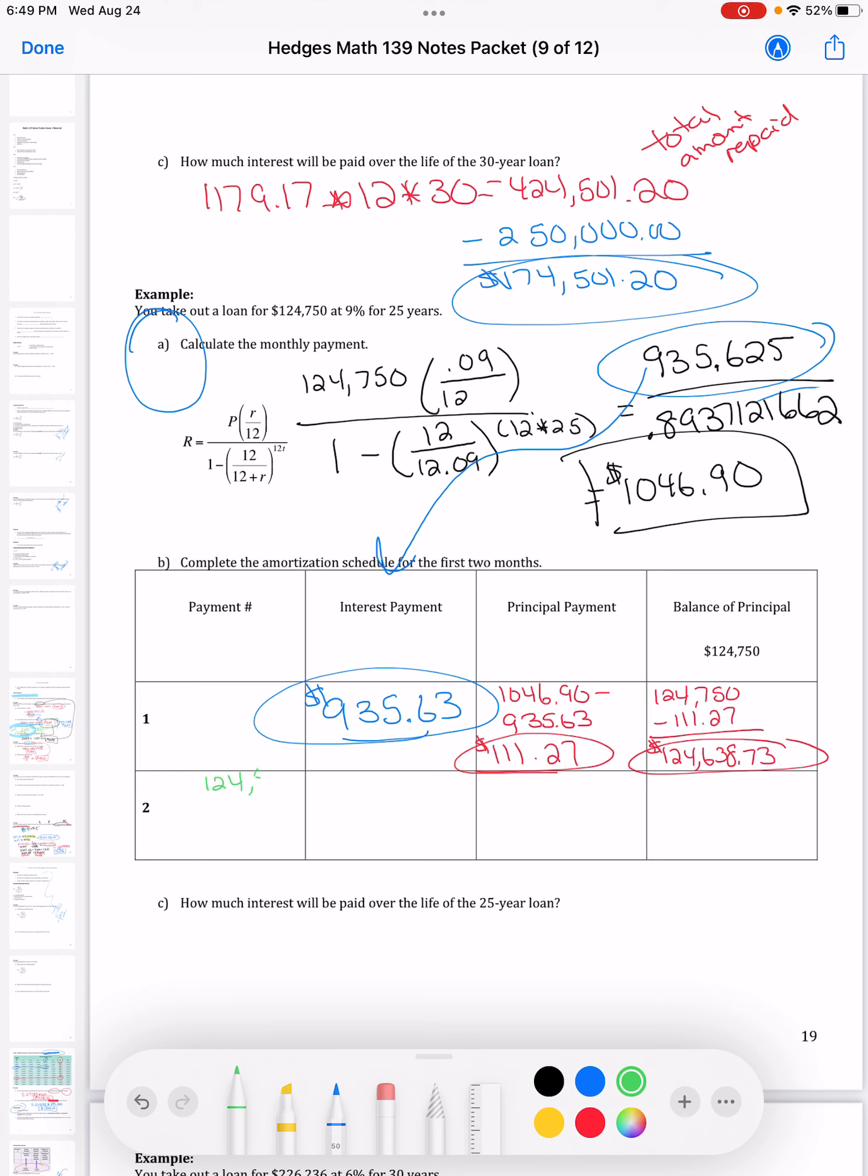$124,638.73. My interest rate's the same. I'm going to type that in my calculator, it should be a little bit less than what I had before, should be close though. So you kind of know if you're in the right ballpark.